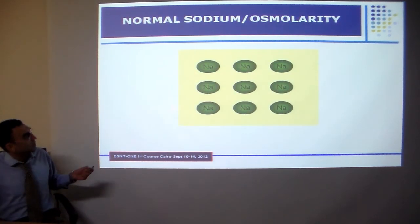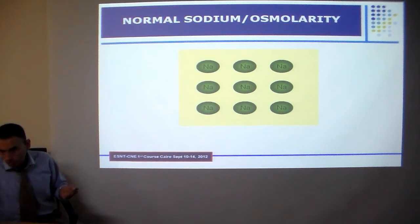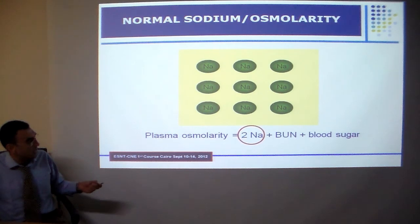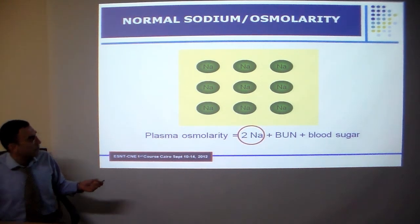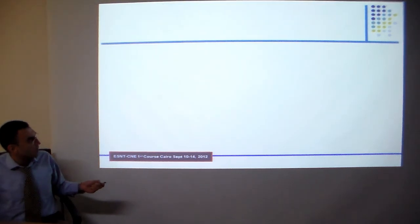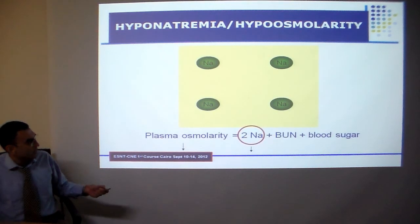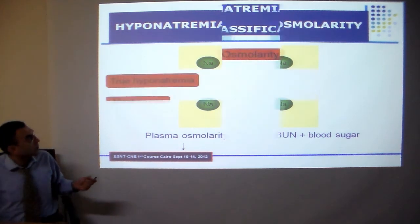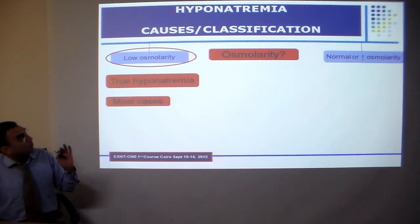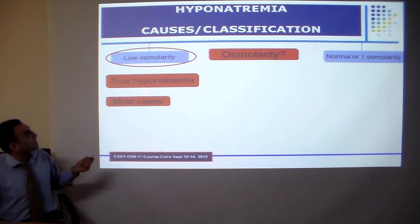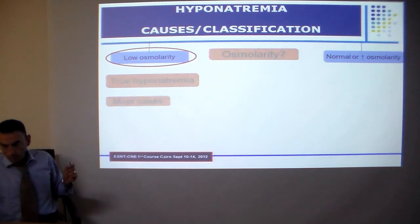In the normal situation, plasma osmolality is calculated by an equation in which sodium is the main determinant. Therefore, if sodium decreases, this will definitely also decrease osmolality. That is why hyponatremia is associated in the majority of cases with hypo-osmolality.